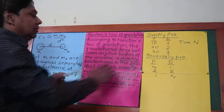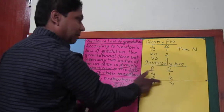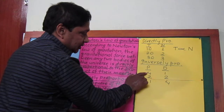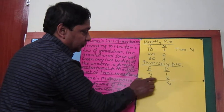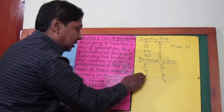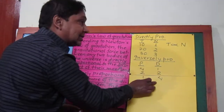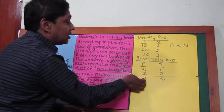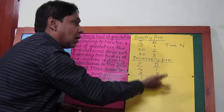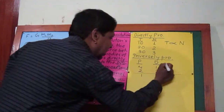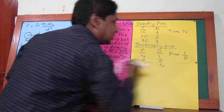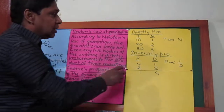Now look at this relation — what kind of relation do we have between the number of painters and number of days required to finish the work? When the number of painters is decreasing, the number of days required to finish the work is increasing. When one quantity decreases the other quantity increases, or just opposite: if the first quantity is increasing then the second is decreasing. This type of relation is the opposite of direct proportion. In this case, number of painters is inversely proportional to the number of days required to finish the work.